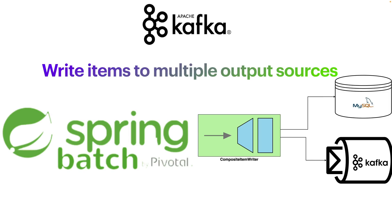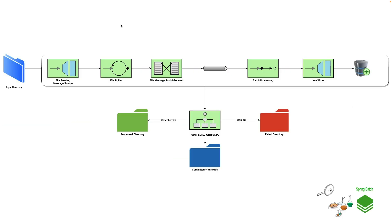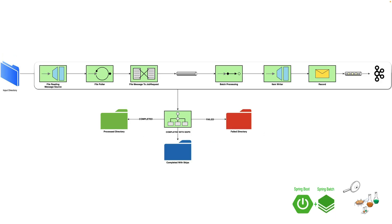Hey guys, welcome back to our Spring Batch and Spring Batch Integration series. In today's video we are going to talk about how we can use Spring Batch to write items to multiple output sources. Let's suppose we have a Spring Batch application that reads from a file and writes the contents or items into a database. As the business evolved, now we need to write the same data into Kafka as well.